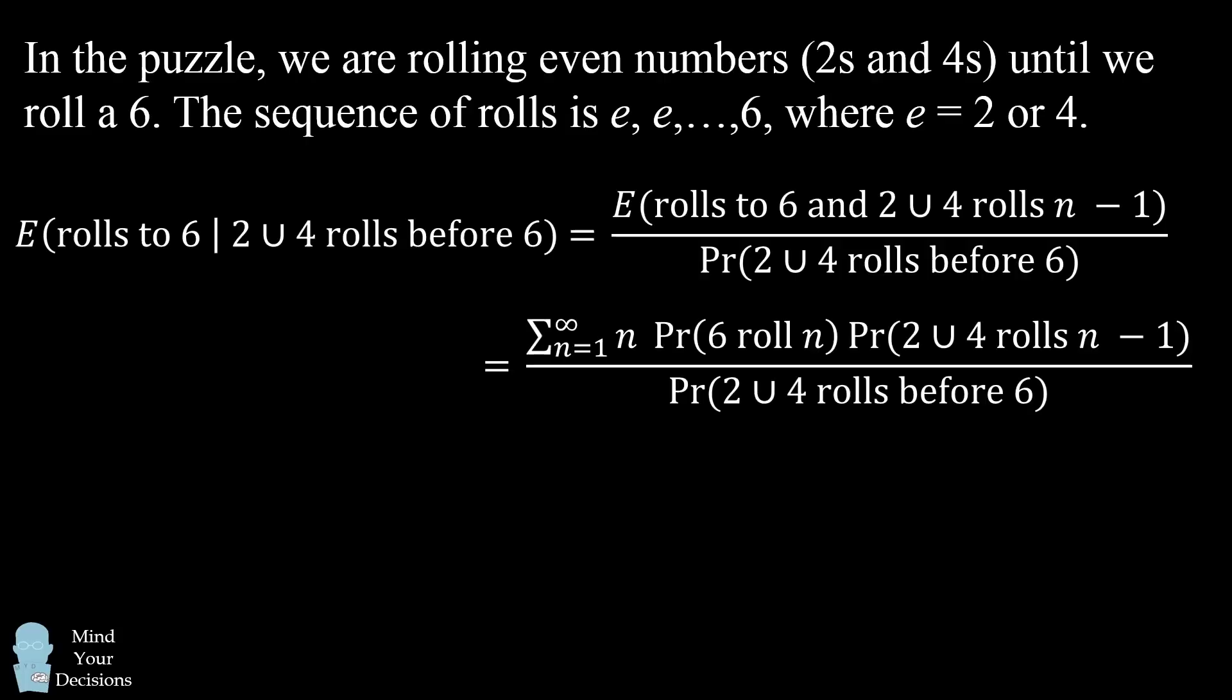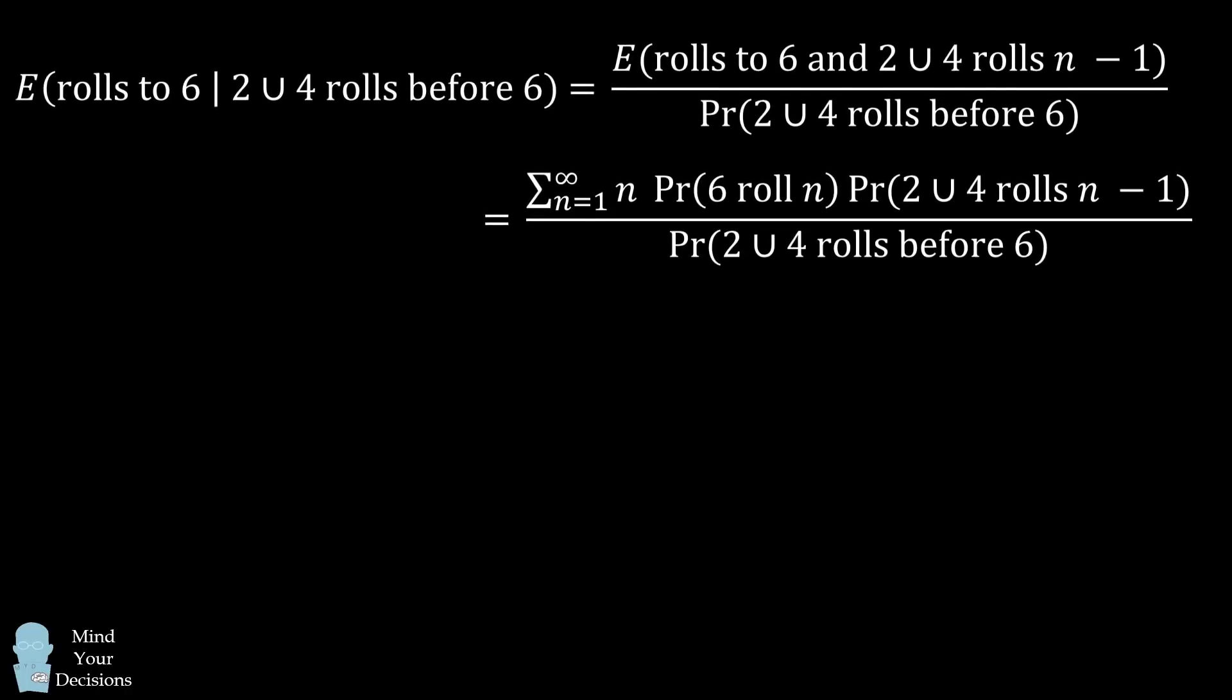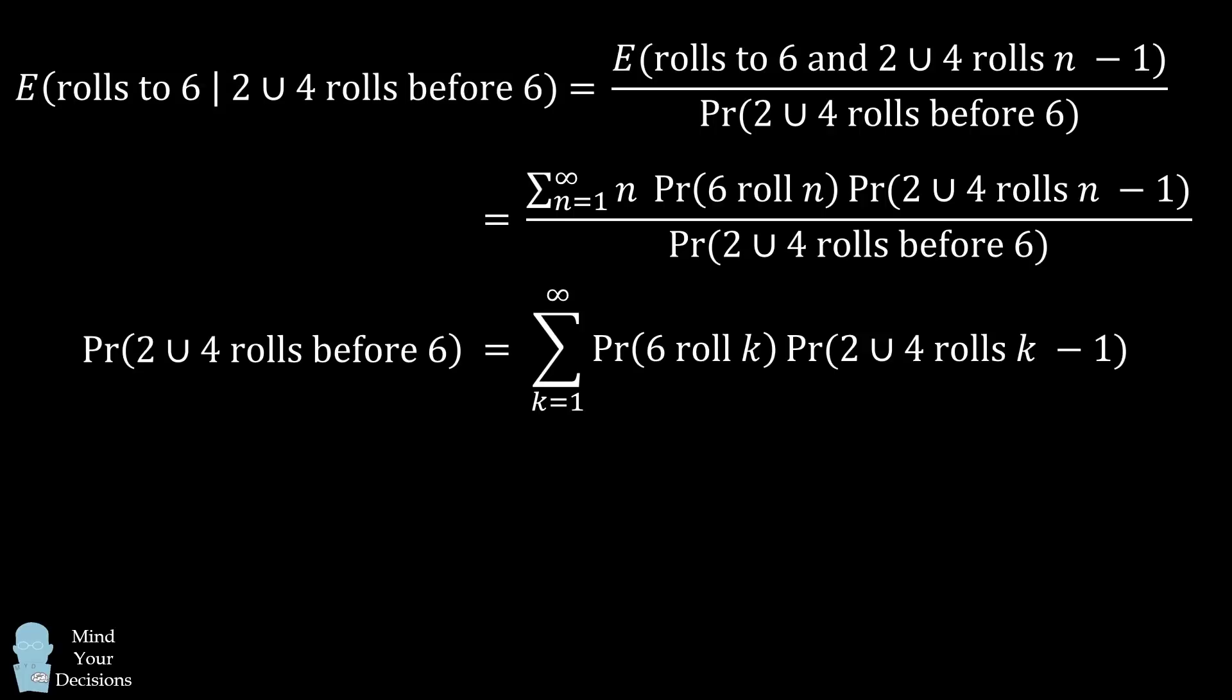So I'll first expand out the numerator into summation form. And now let's calculate the denominator. We need to know the probability that we get only 2s and 4s before we roll a 6 in some roll. This will be the sum from 1 to infinity of the probability that we roll 6 in roll k times the probability we only get 2s or 4s before roll k, which will be the rolls all the way up to k-1. Now the probability that we roll 6 in any particular roll will be 1/6. And then the probability that we roll only 2s and 4s up to that roll will be the probability 2/6, which simplifies to be 1/3, all the way for each of the k-1 rolls before we get the 6.